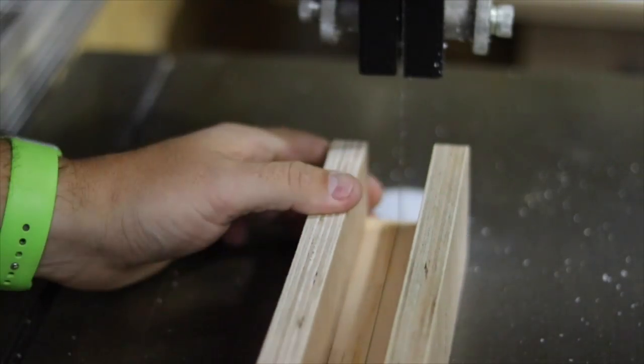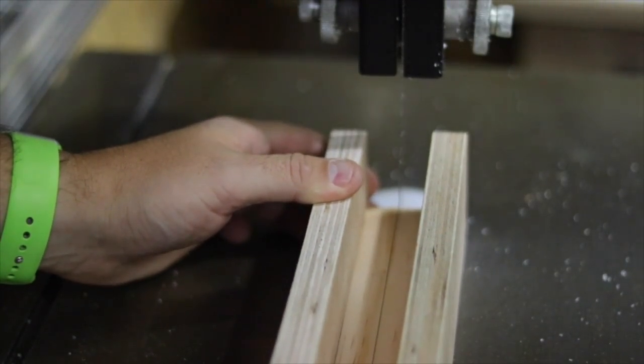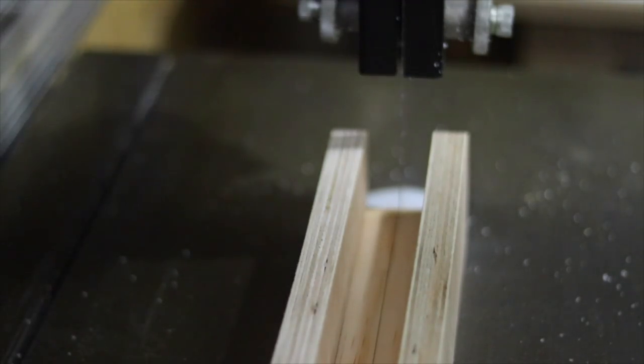So I've taken it to the bandsaw and what I need to do is get the center of the blade lined up with the center line that I marked whilst I had access to the sides. I'm going to bring my fence in.